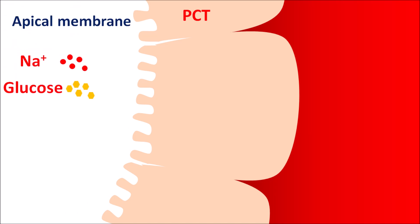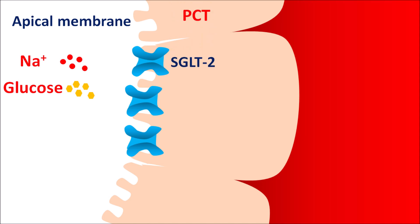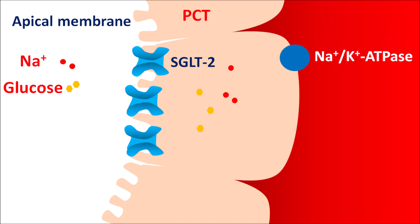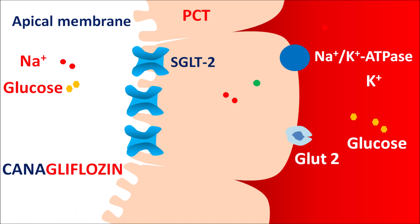Within the proximal convoluted tubule (PCT), on the apical membrane, glucose and sodium present within the filtrate can be reabsorbed. A special transporter — SGLT2, sodium glucose co-transporter 2 — is present through which both sodium and glucose enter across the membrane. On the basolateral membrane, the sodium-potassium ATPase pump exchanges sodium for potassium, allowing sodium to enter the systemic circulation. For glucose reabsorption, GLUT2 receptors are present on the basolateral membrane, through which glucose enters the systemic circulation.